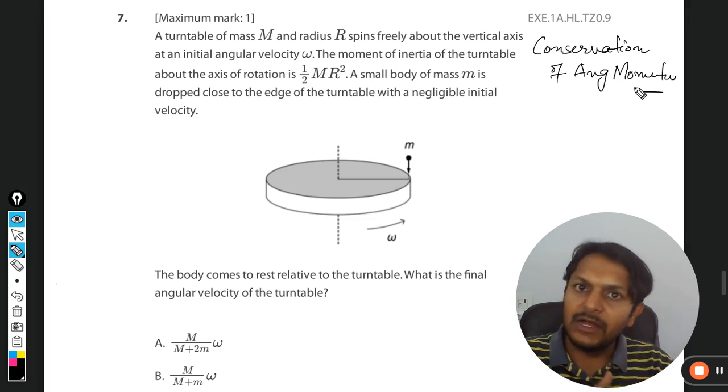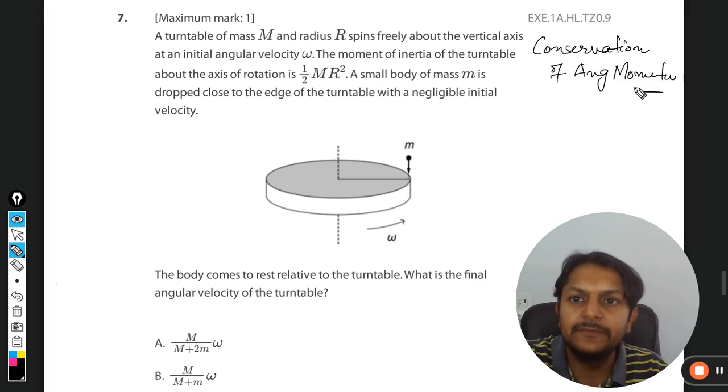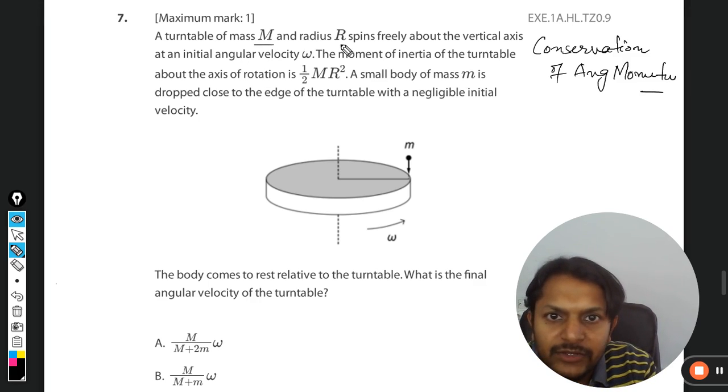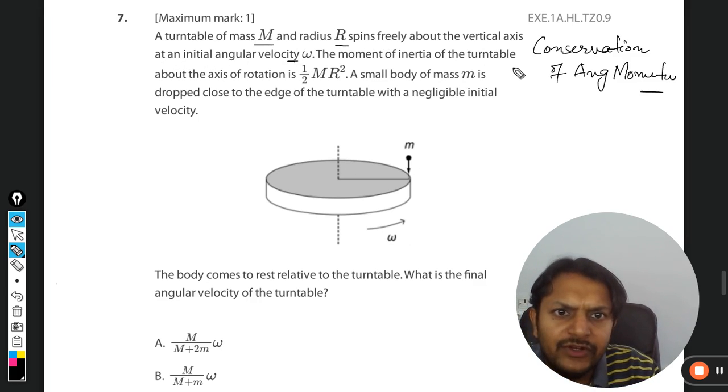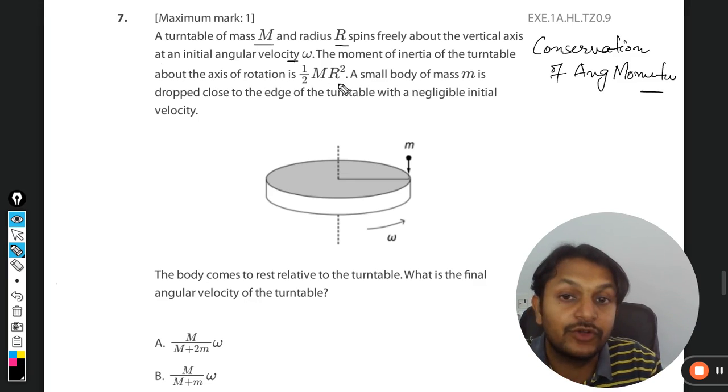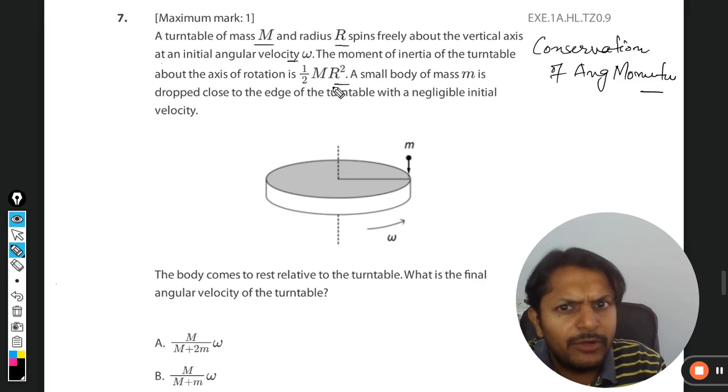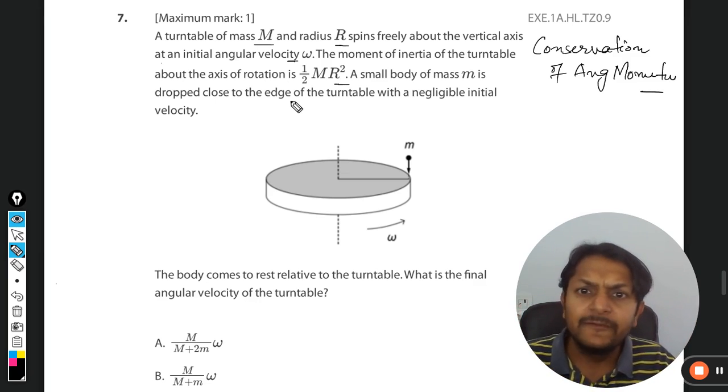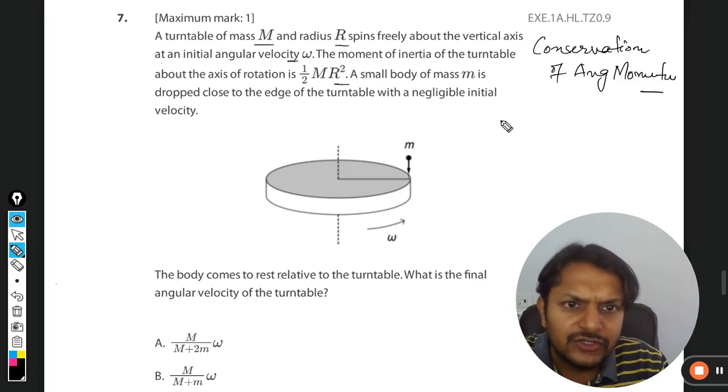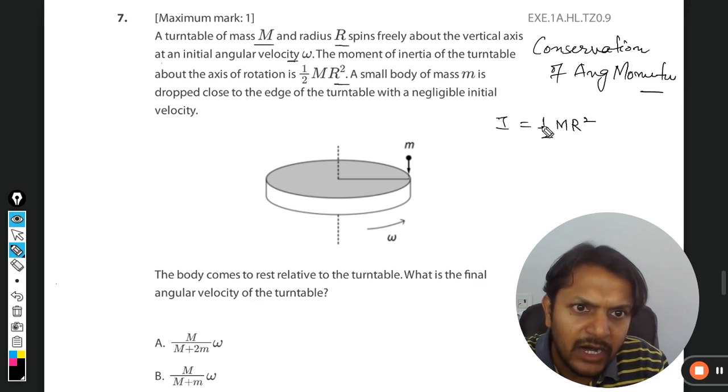Let's see: a turntable of mass M and radius R spins freely about the vertical axis at an initial angular velocity omega. The moment of inertia of the turntable about the axis of rotation is given, so you need not remember anything. The moment of inertia is given as ½MR². Clear. A small body of mass m is dropped close to the edge of the turntable with negligible initial